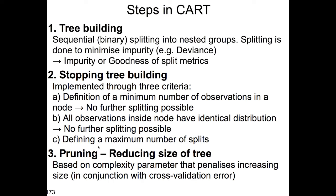After the tree stops building, you can reduce the size of the tree. This is called pruning and it is often employed. It is based on a complexity parameter that penalizes increasing tree size, usually in conjunction with cross-validation. This complexity parameter is similar to penalties in multiple regression — the more splits we have in a tree, the more it is penalized.